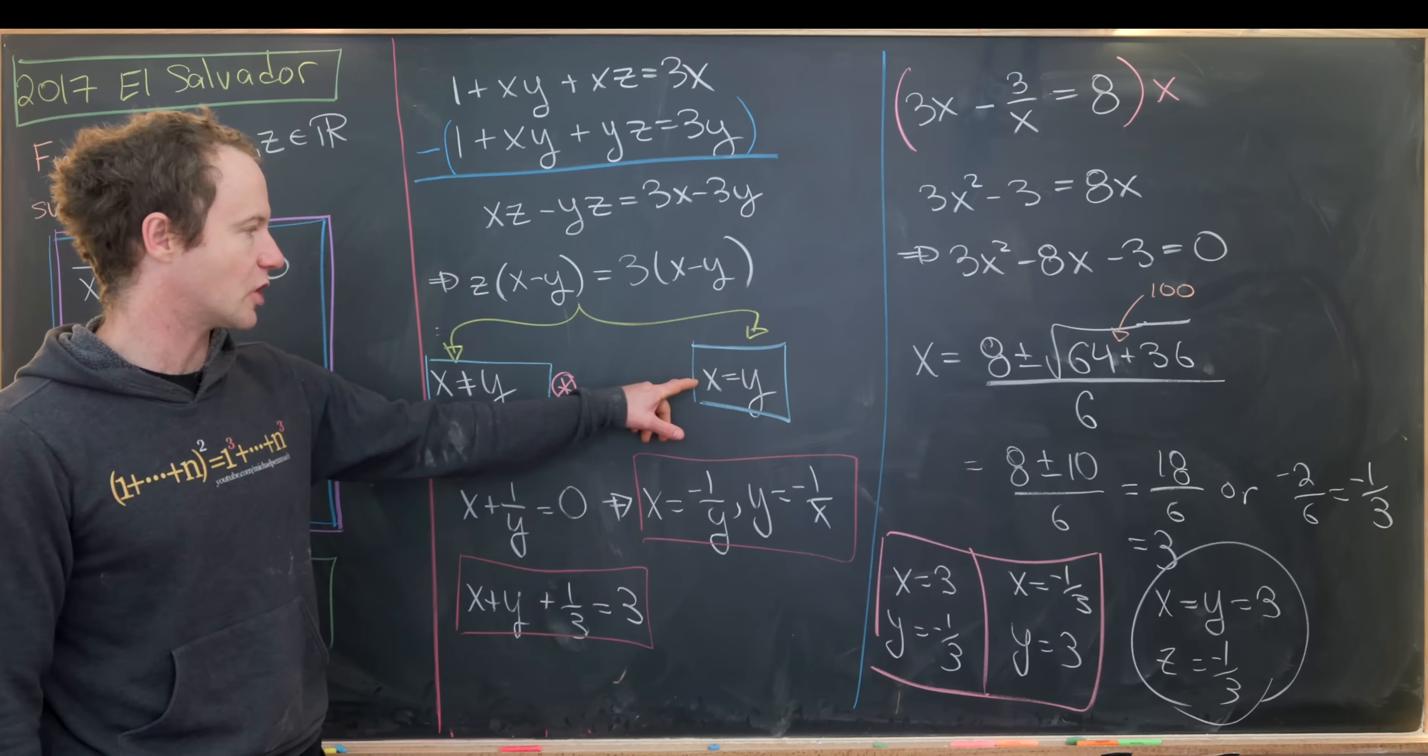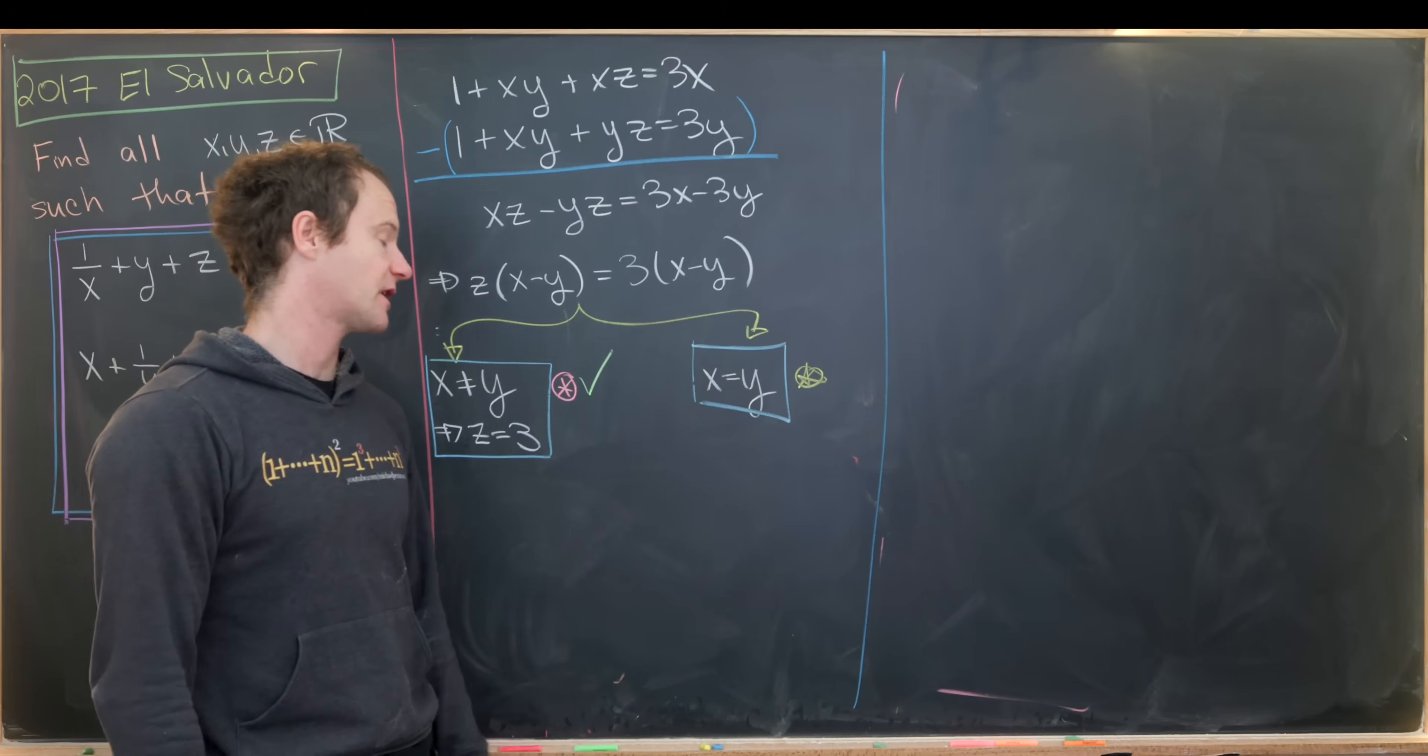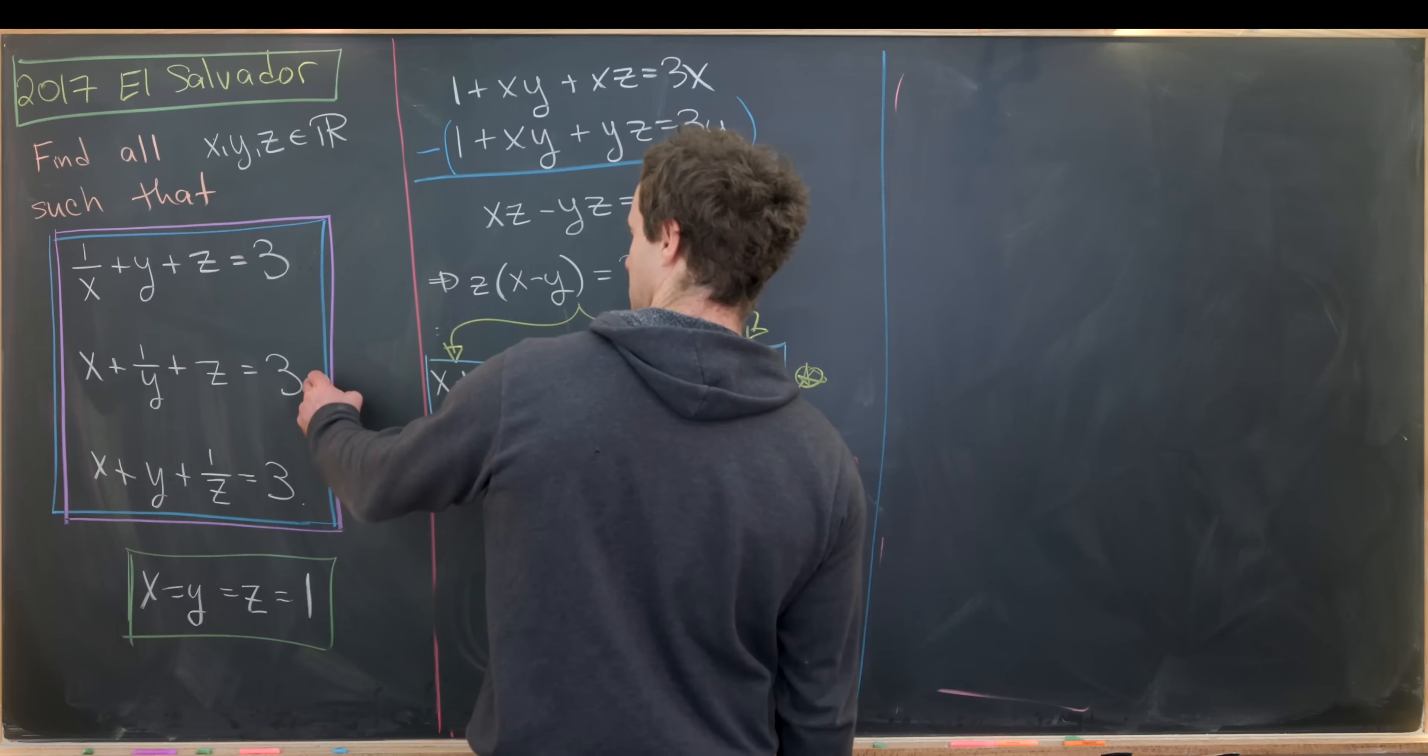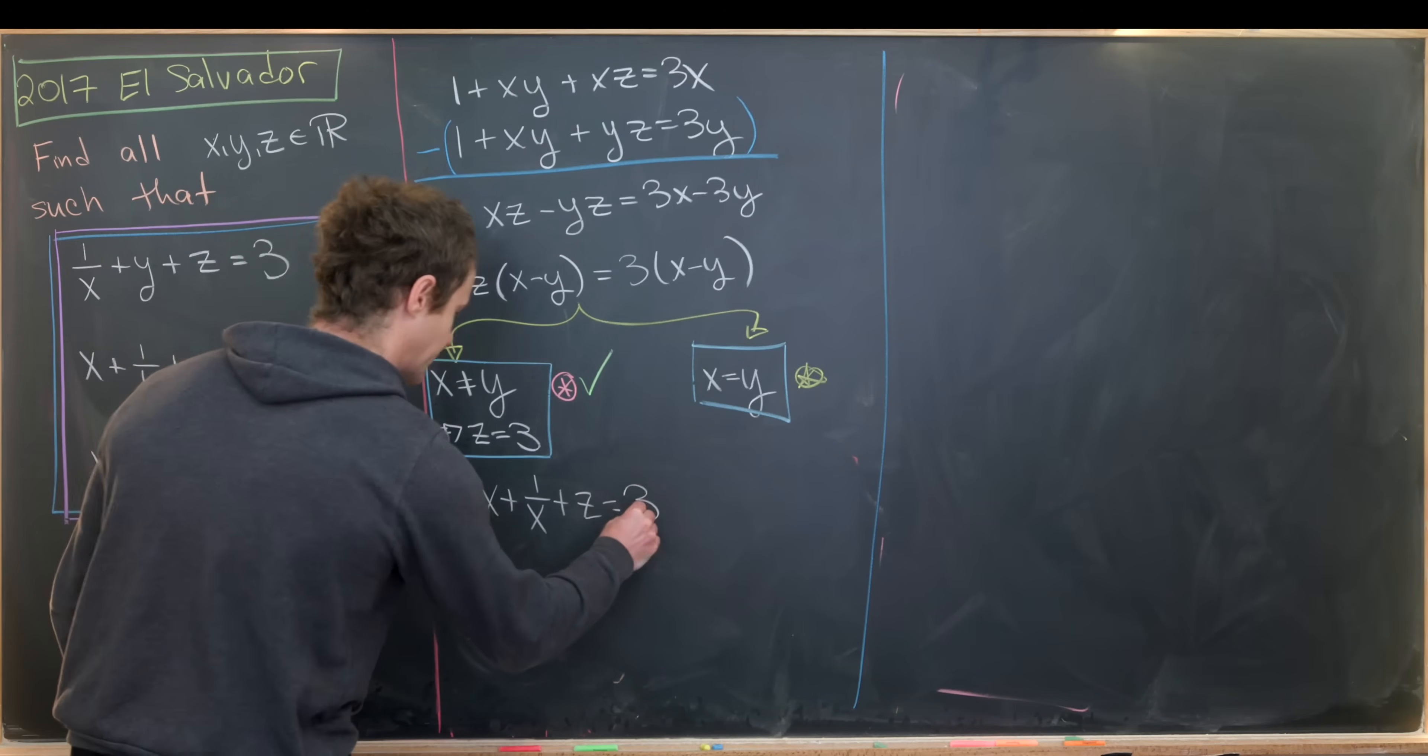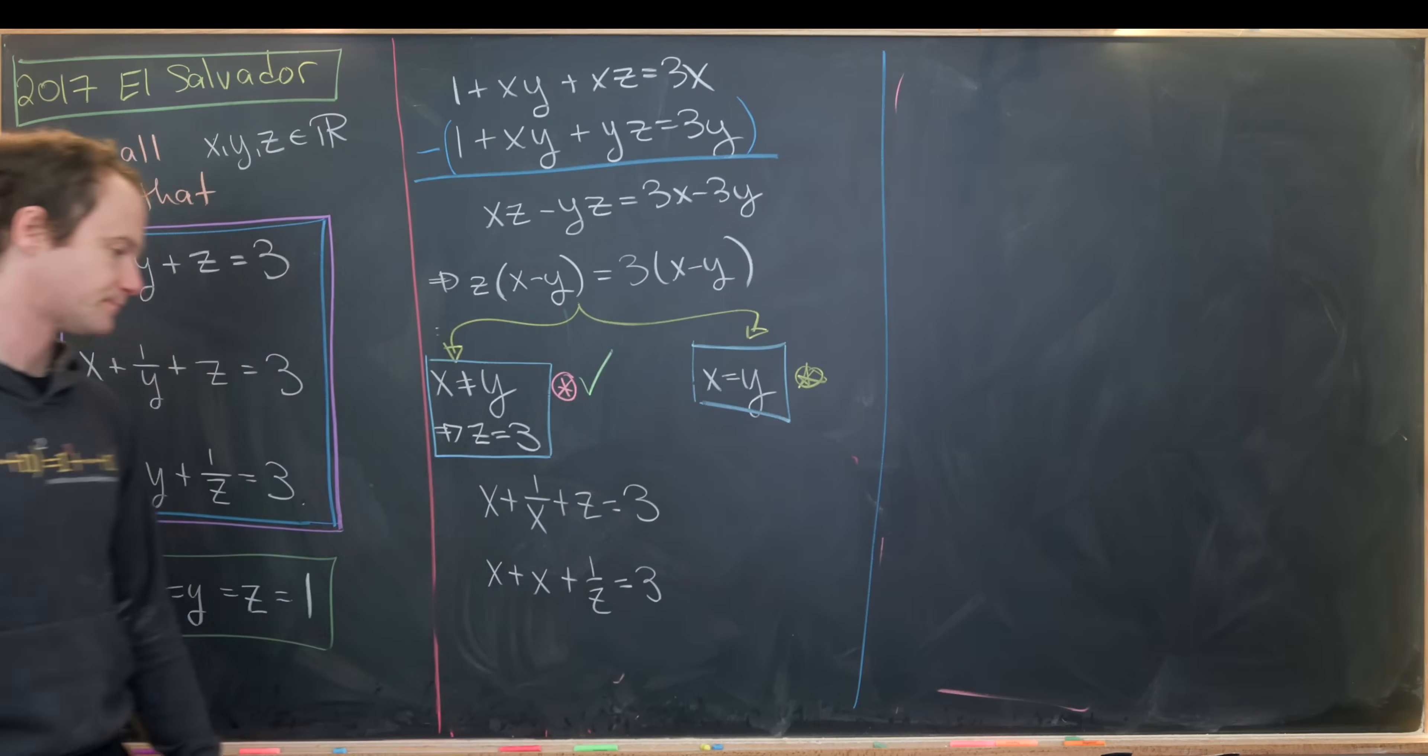We just finished working out this case when x was not equal to y and thus z was equal to 3. Now we're ready to look at the case when x is equal to y. That will give us a system of equations. We'll have x plus 1 over x plus z equals 3 and then we'll have x plus x plus 1 over z equals 3.